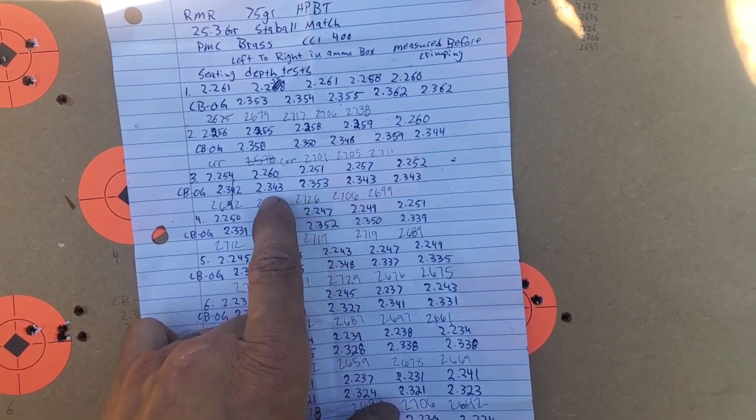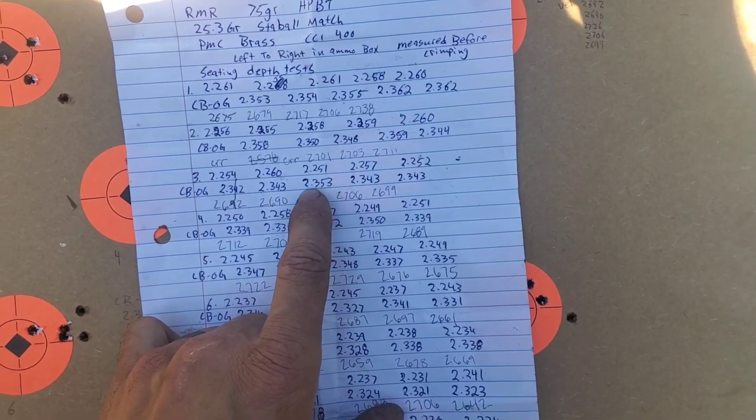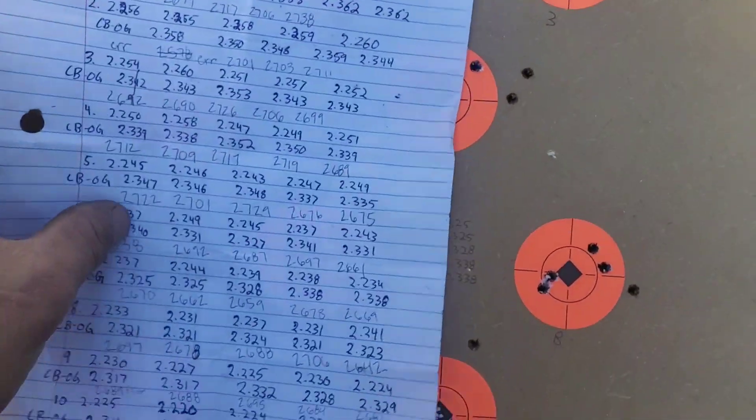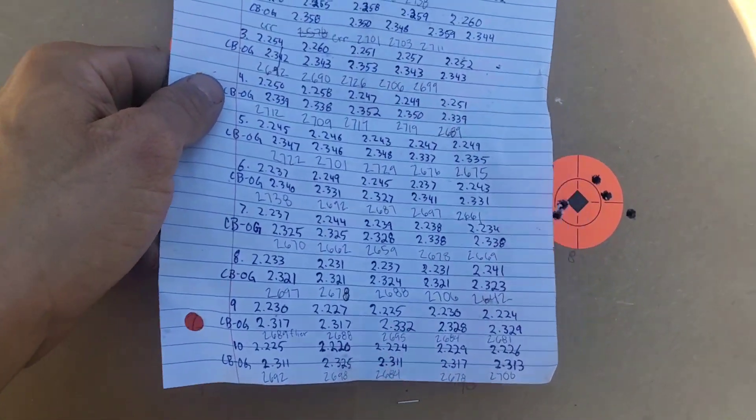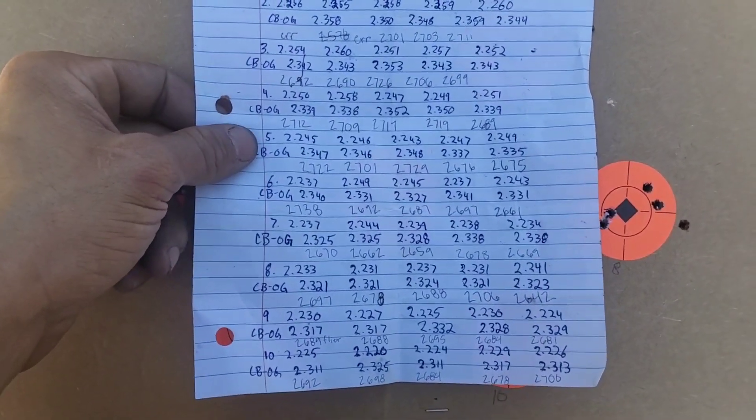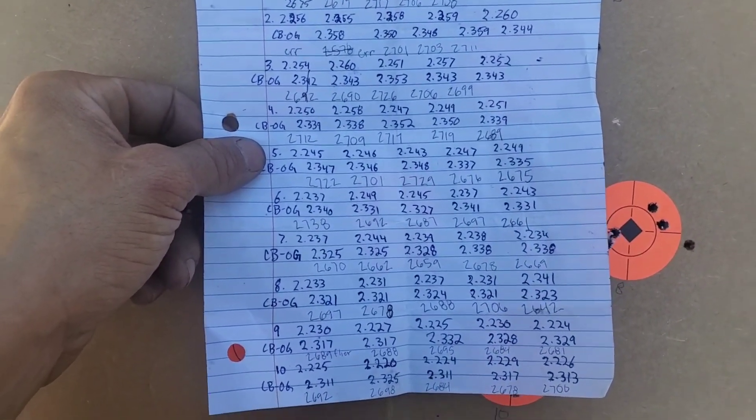And the best group of the day was one with very little variation, except for one which is literally 10 thousandths, 11 thousandths apart.